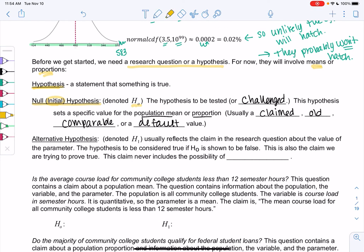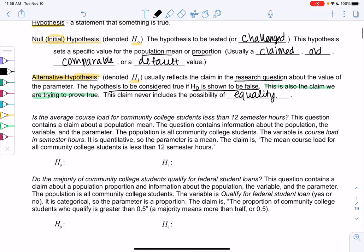The alternative hypothesis is the other one, H1. This usually reflects the claim in the research question about the value of the parameter. So this is usually our research question - what are we trying to prove? The hypothesis to be considered true if H0 is false. This is the claim we are trying to prove. This claim never includes the possibility of equality because it's basically impossible to prove something's equal, but we can prove greater thans or less thans.